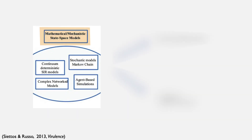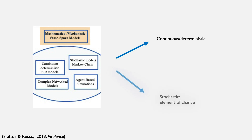There are several different types, but some of the primary differences to consider in these models are whether they're continuous through time or occur in discrete time, and whether or not there is an element of stochasticity — meaning whether the modeler assumes there is an element of chance that comes into play as to whether or not an infection event actually occurs.